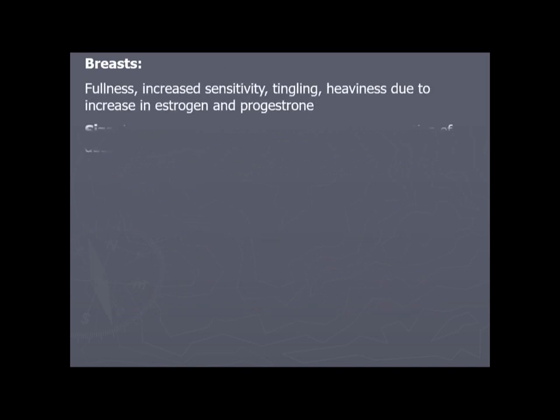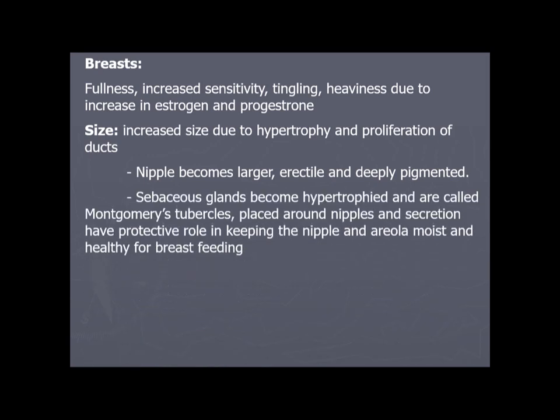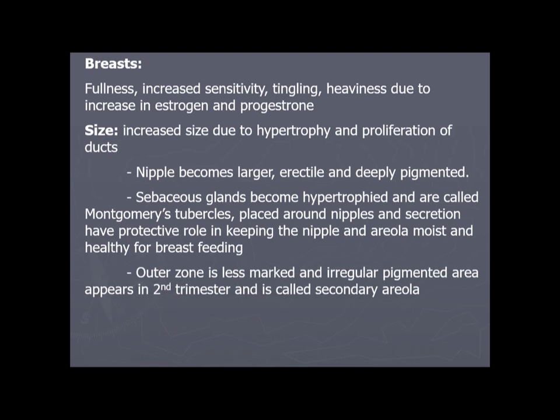Breast changes include fullness, increased sensitivity, tingling, and heaviness due to increased estrogen and progesterone. Size increases due to hypertrophy and proliferation of ducts. The nipple becomes larger, erectile, and deeply pigmented. Sebaceous glands become hypertrophied and are called Montgomery's tubercles, placed around the nipple; their secretions keep the nipple and areola moist for breastfeeding. A secondary areola, a less marked and irregularly pigmented area, appears in the second trimester.